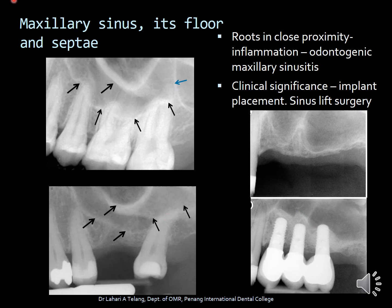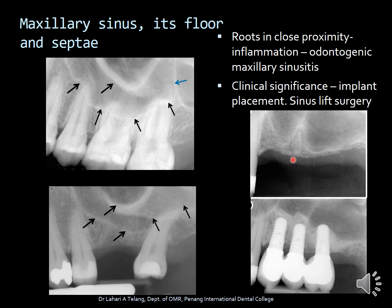Moving on to the maxillary sinus — in the maxillary posterior region, the roots of the premolars and molars are in close proximity to the sinus floor. Occasionally, odontogenic infection in the maxillary molar roots, especially the palatal root, can inflame the sinus floor and lead to odontogenic maxillary sinusitis. In an edentulous area, the sinus floor generally dips lower, as visible in this radiograph — which has important clinical significance when placing an implant. It is necessary to lift up the sinus floor to make space for the implant; that surgery is called a sinus lift. This radiograph shows how the sinus floor in the edentulous area has been lifted and space has been made for an implant.